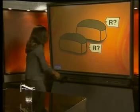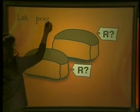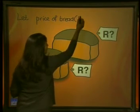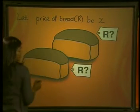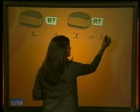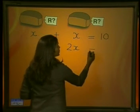We've got to analyze the given information and decide what is unknown. In this case, the price of the bread is unknown, so we must choose a letter to represent it. We let the price of the bread — in rands — be x. This means each loaf of bread costs x, so x plus x equals our total amount of money, which is ten. Now x plus x gives us 2x, so we have 2x equals ten.